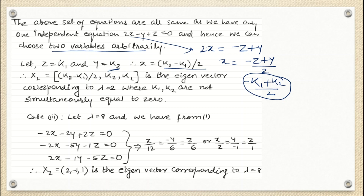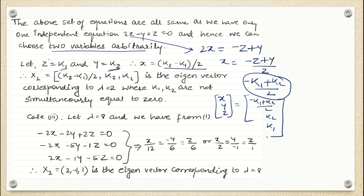So the eigenvector in column matrix form is: x equals (k2 minus k1)/2, y equals k2, z equals k1. In many books they leave the answer in this form. Some other books write it by separating the contributions of k1 and k2 — that means we separate with respect to k1 and with respect to k2.